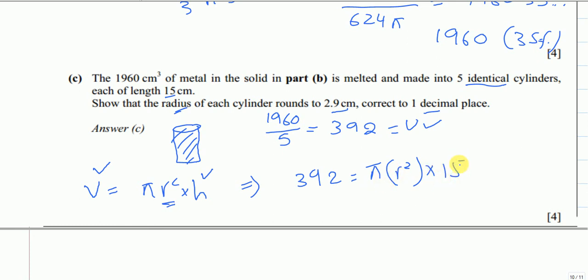Rearranging: 392/(π × 15) = r². Square root both sides to get r.